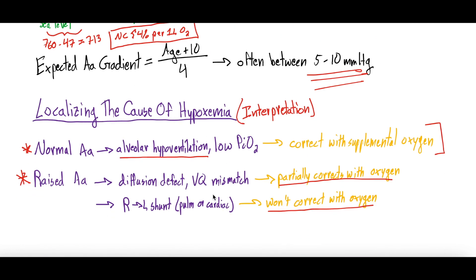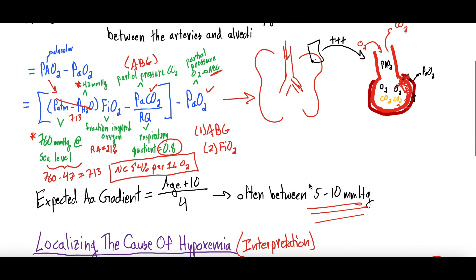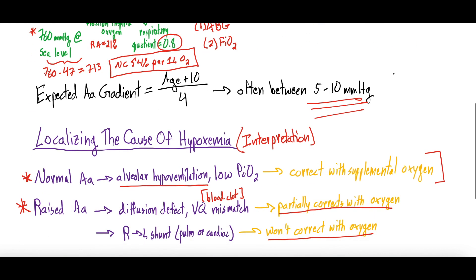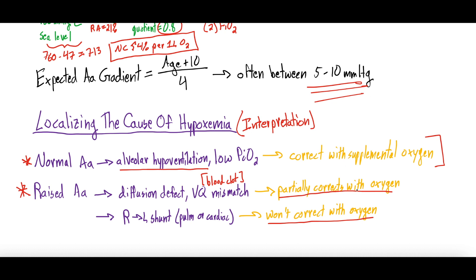Another cause of a raised AA gradient is a V/Q mismatch — ventilation-perfusion mismatch. The classic example is a pulmonary embolism, or blood clot. Here, the oxygen in the alveoli can diffuse just fine, but there's a clot in the artery so there isn't enough blood flow reaching that alveolus, meaning the oxygen has nowhere to diffuse into. Both a diffusion defect and V/Q mismatch will partially correct with supplemental oxygen, though not fully resolve.